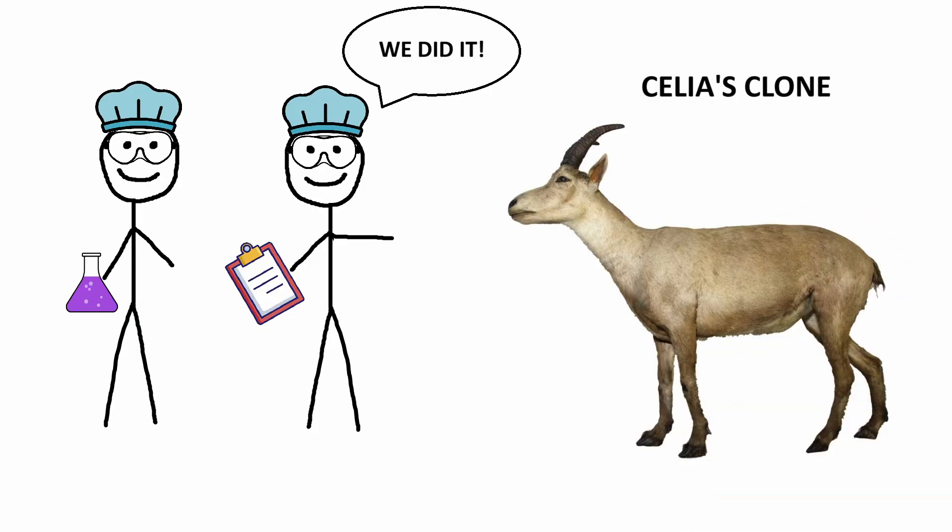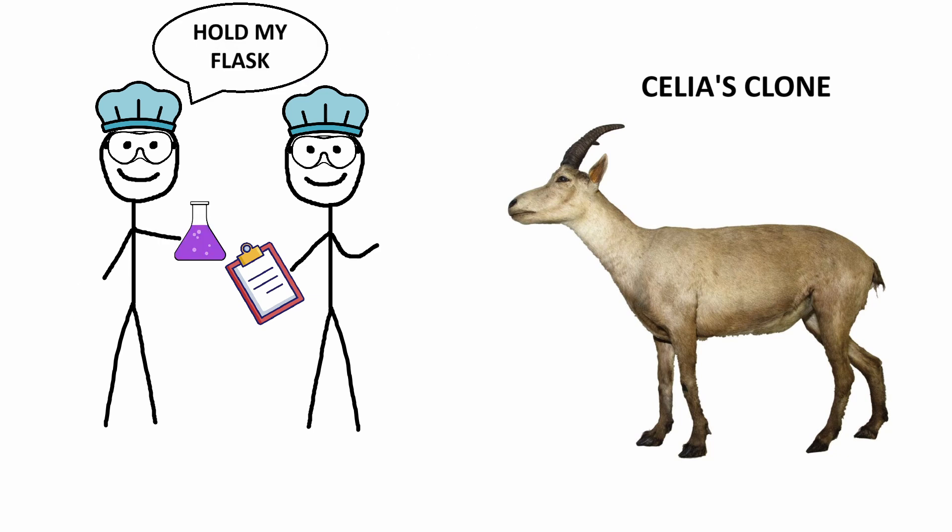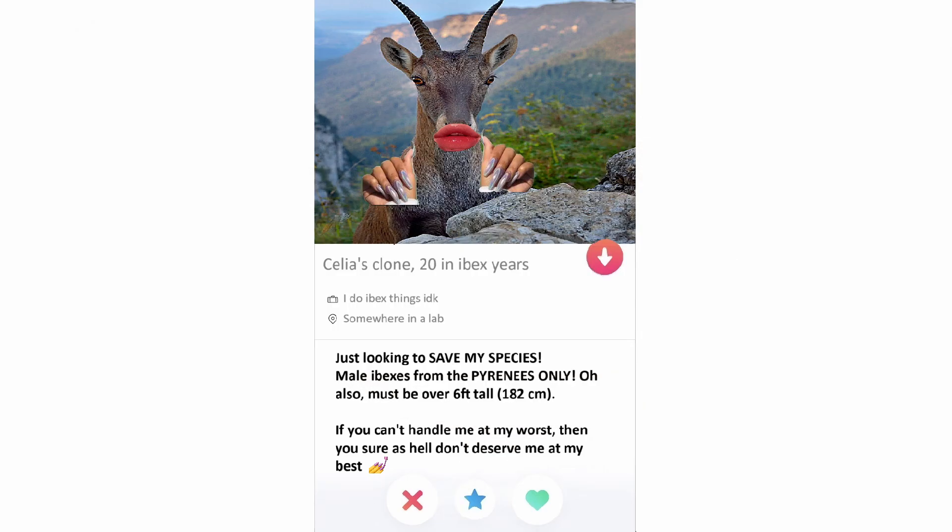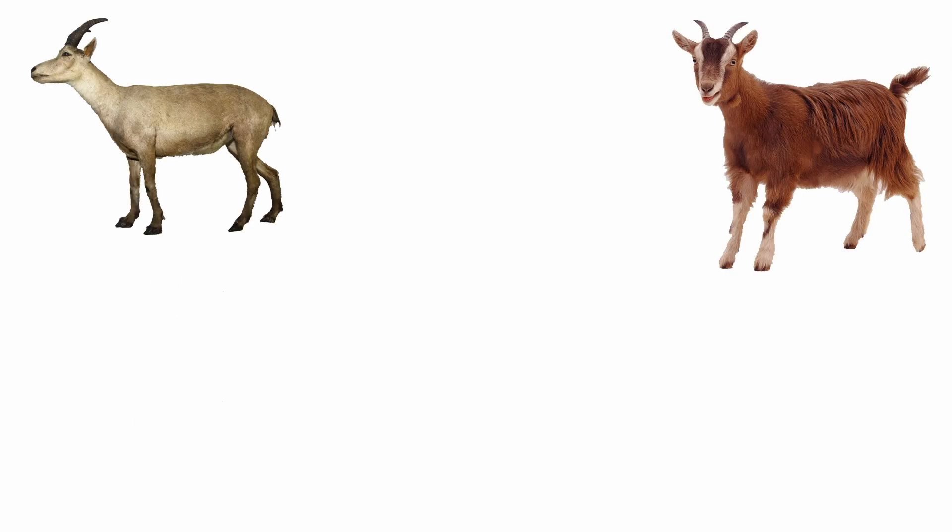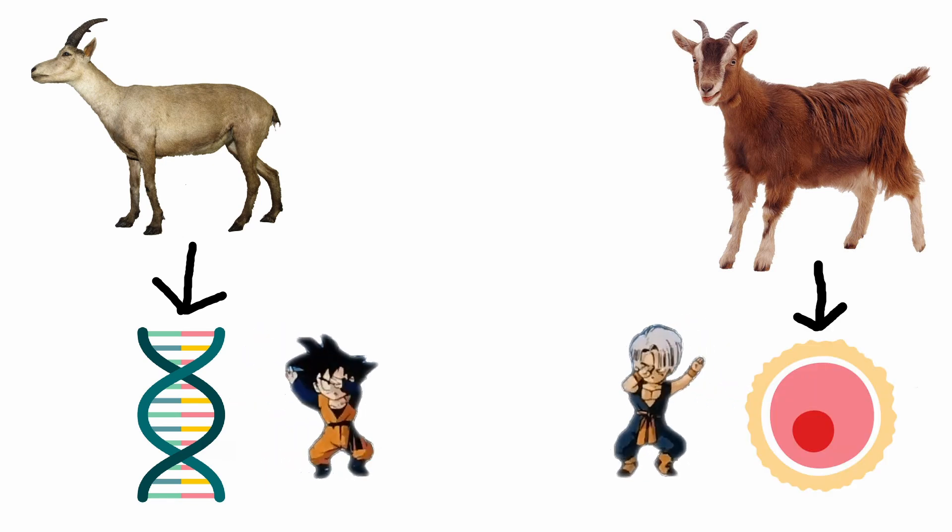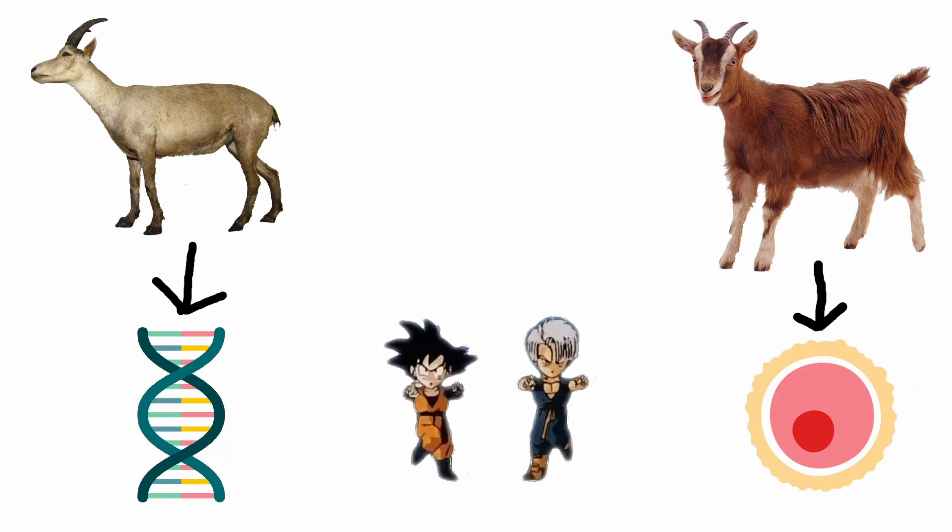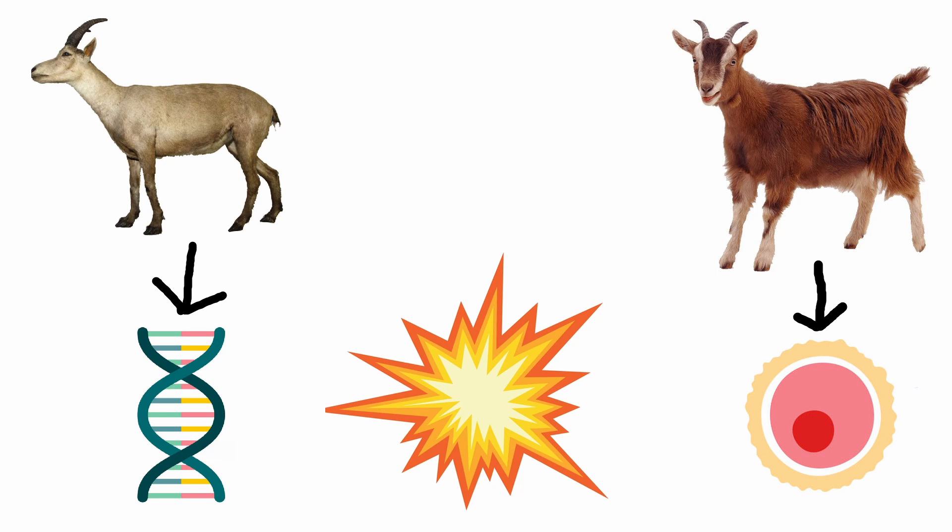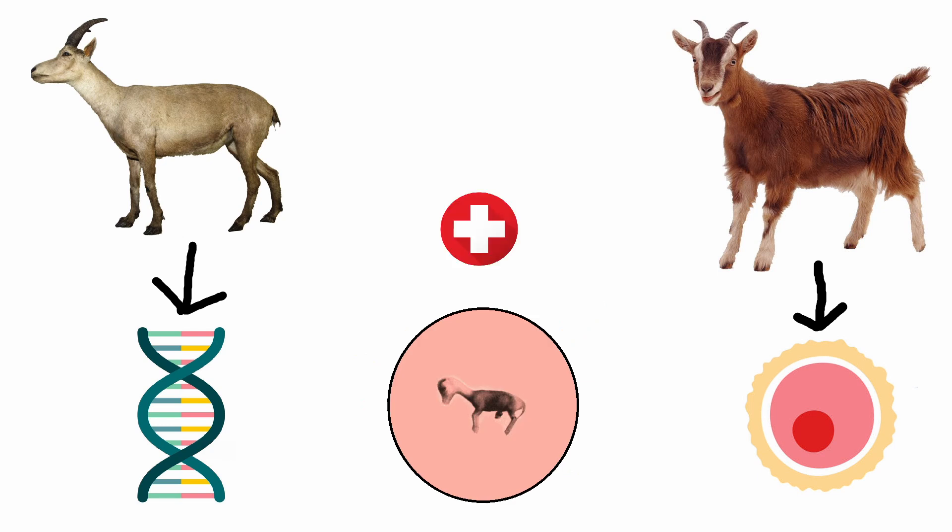However, a big problem was that even if they successfully created a female clone, there were no male Pyrenean Ibex left to create a new population. The scientists used Celia's extracted DNA and combined it with egg cells from goats to create embryos. After many unsuccessful attempts, only one clone was born, but it passed away shortly due to health issues.